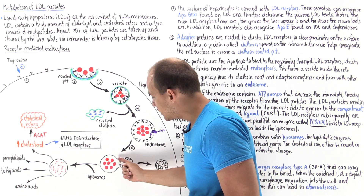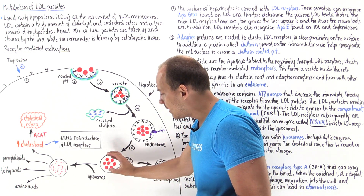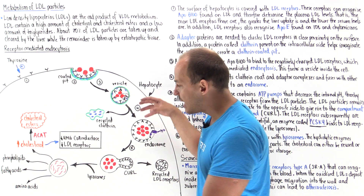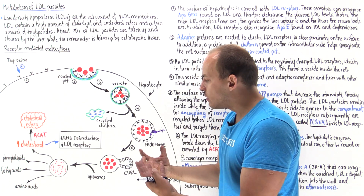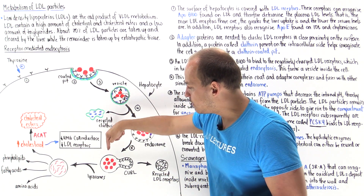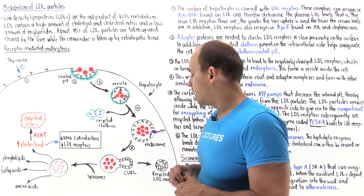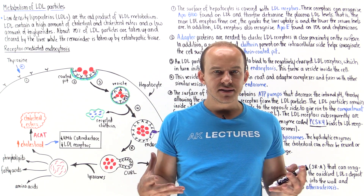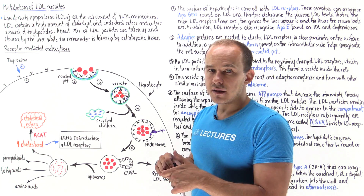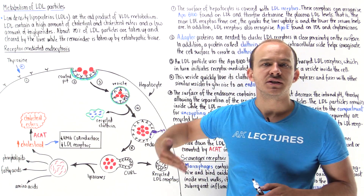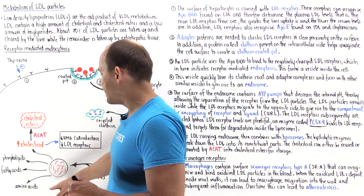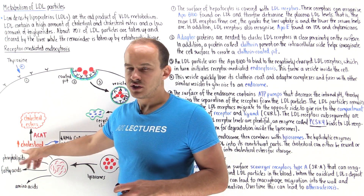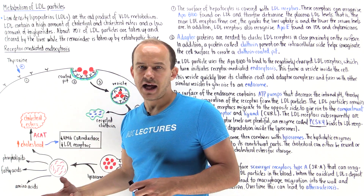The compartment containing the LDL particles breaks off and combines with lysosomes in the cell. The fusion allows the lysosome to begin breaking down that LDL particle. The lysosomes contain hydrolytic enzymes that act on the LDL particles and break it down to its constituents — amino acids, fatty acids, phospholipids, and cholesterol — and all of this can be reused by the cell.